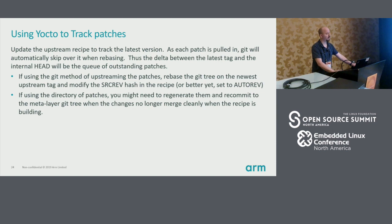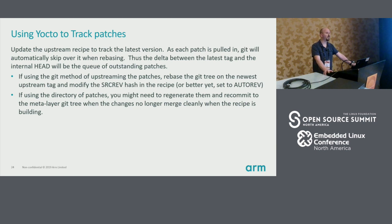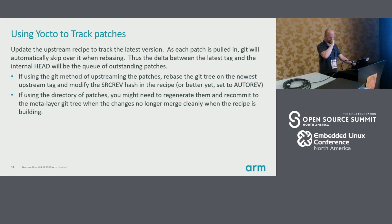So as each patch is pulled in, Git is automatically going to skip over it when you rebase. Each replay is going to have a shrinking and shrinking list. As you get feedback from the mailing list, you're going to be modifying these, but it's not that ugly. If you want to use the source rev, you're going to have to update that constantly in your recipe. Autorev is a great way to get around that, but it also has its problems because you're going to be tracking the head, and if all those patches are going into the directory, you'll have to regenerate them every single time.